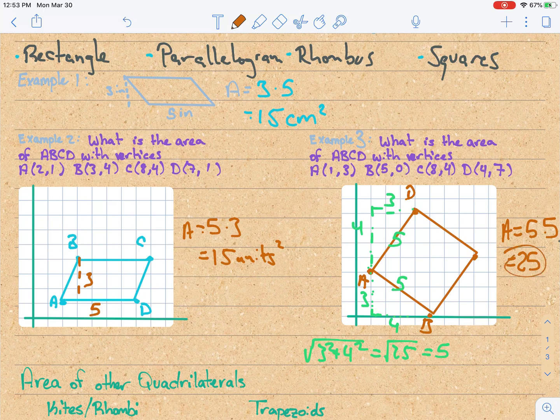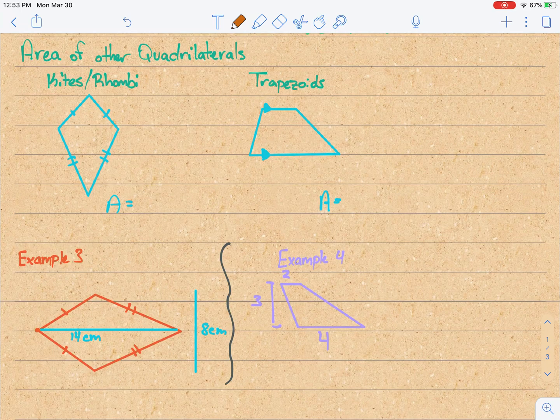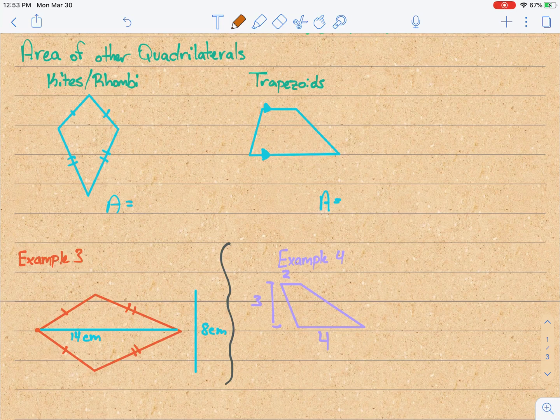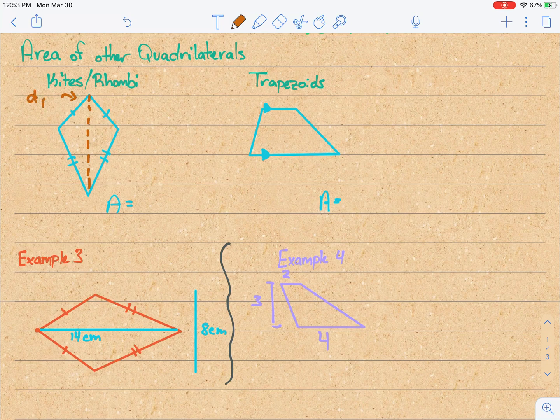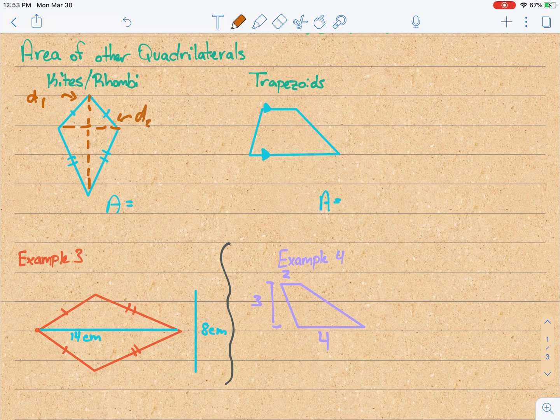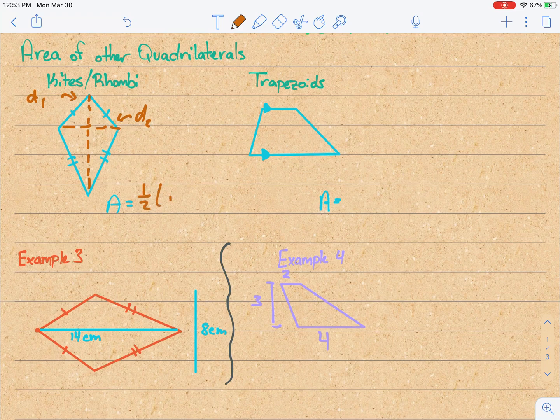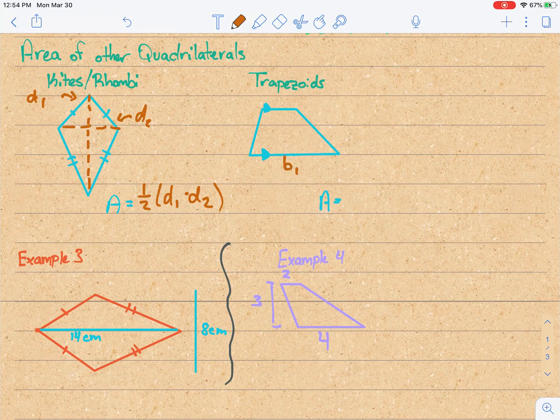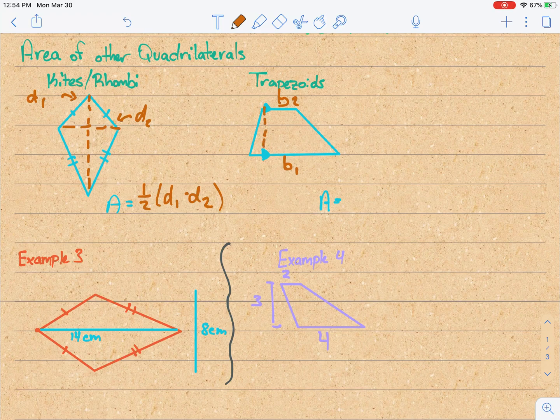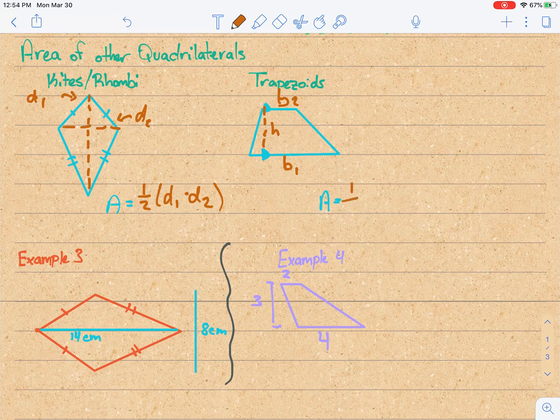There's a few other quadrilaterals we have that we need area formulas for. So kites and rhombi, their area is based off of the diagonals. So I'm going to draw this diagonal, call that d1. I'll draw the next diagonal, and I'll call this one d2. The area of a kite and a rhombus using the diagonals is 1/2 diagonal 1 times diagonal 2. For a trapezoid, it's based off of the bases and height. So we'll call the bottom side base 1 and the top side base 2, and then we'll find the height the same way, it's just straight up and down. The area of a trapezoid is 1/2 (base 1 plus base 2) times the height.